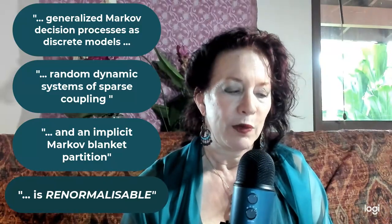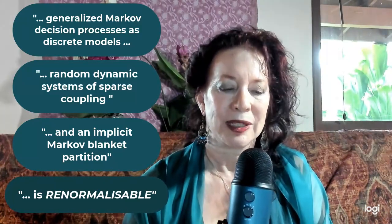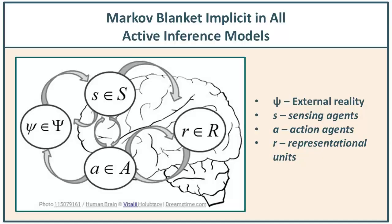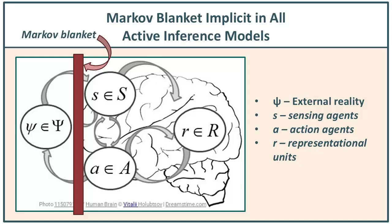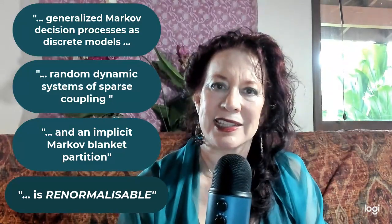With this RGM — renormalizing generative model — it is very generative. Friston is making the point that random dynamic systems of sparse coupling and an implicit Markov blanket partition are the key conditions. This notion of the implicit Markov blanket has been part of Friston's thinking ever since 2010, 2013, 2015 — it's intrinsic to the work. He says we can start to pull in this renormalizing approach: when you have partitions in the system, you can view them as coupled across units of space and time, and that allows us to pull in a renormalizing approach.